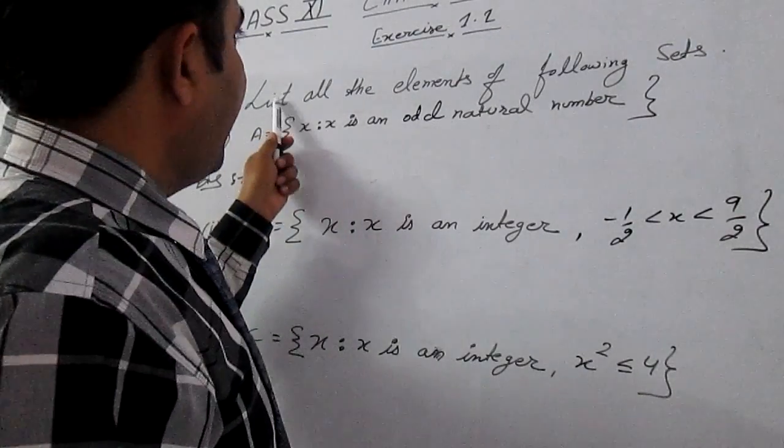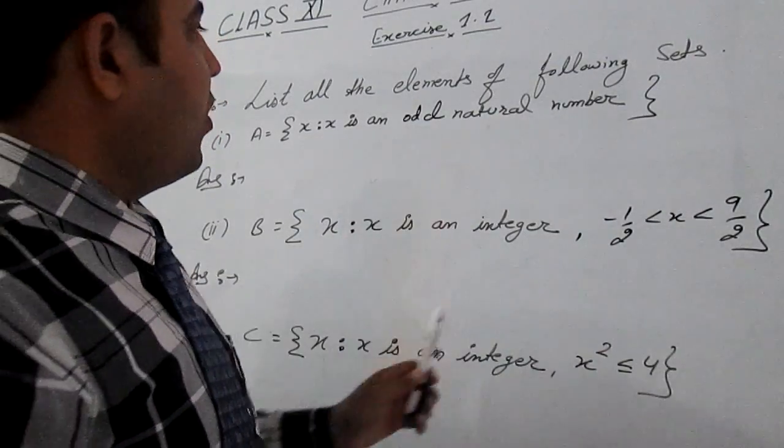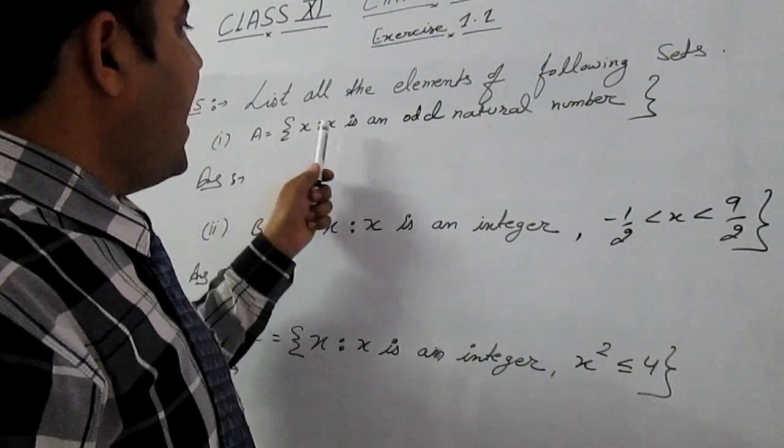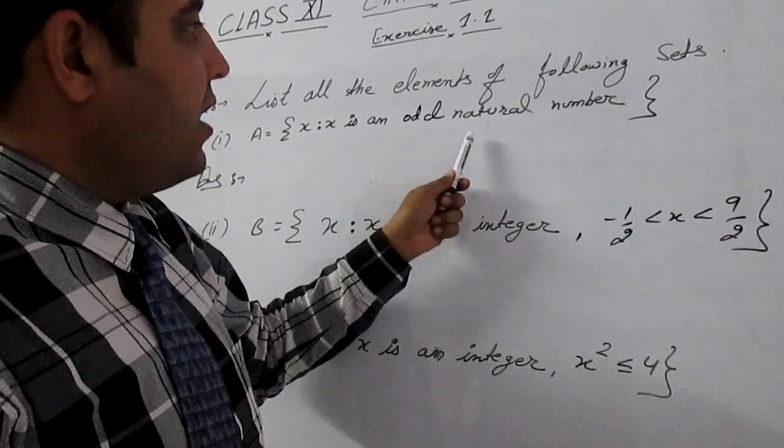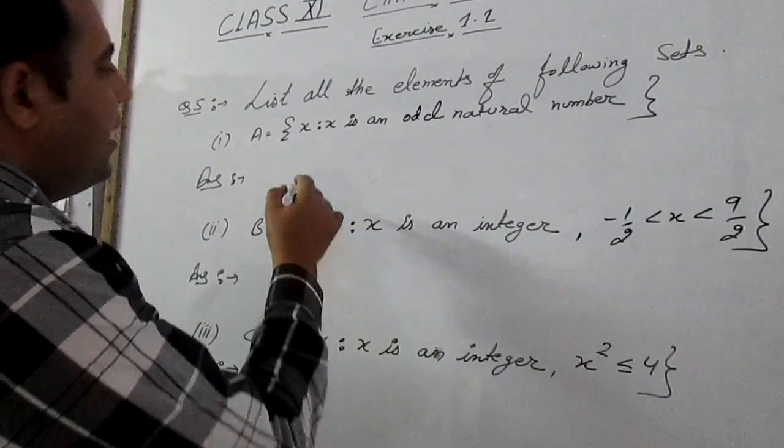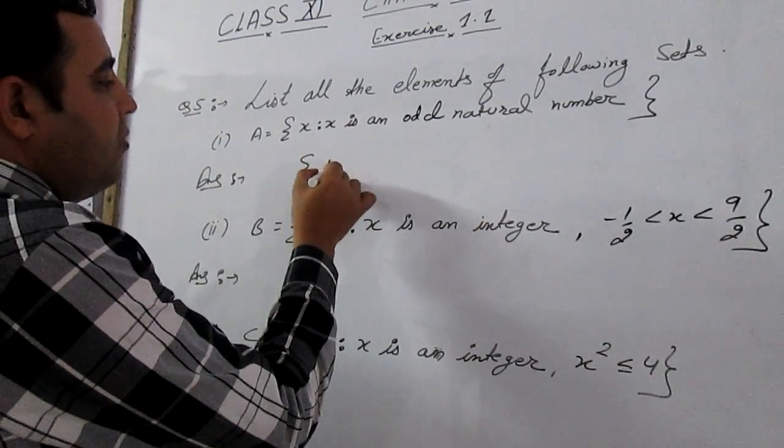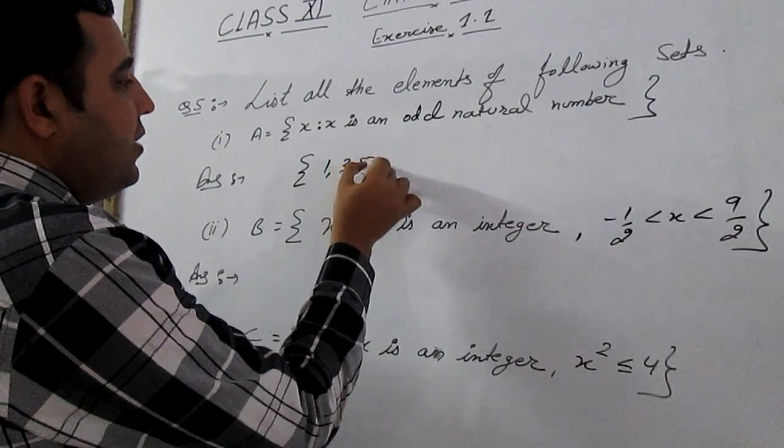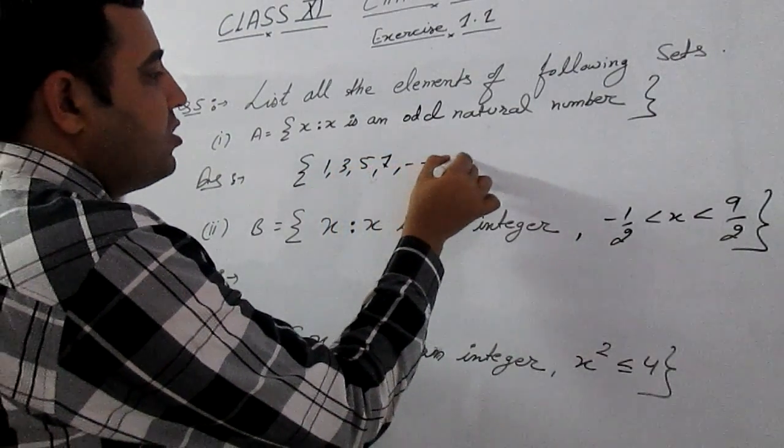Yes, question number 5. List all the elements of following sets: A is given X is such that X is an odd natural number. Then odd natural number starts from 1, 3, 5, 7 and so on.